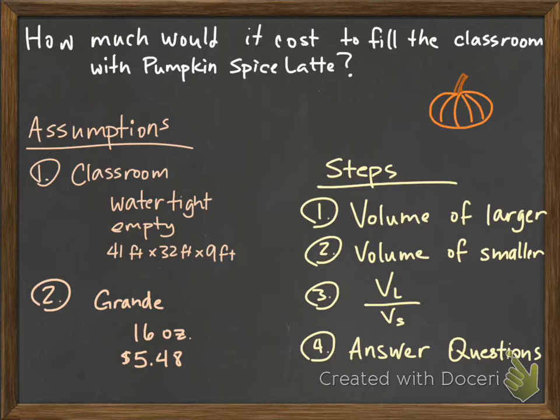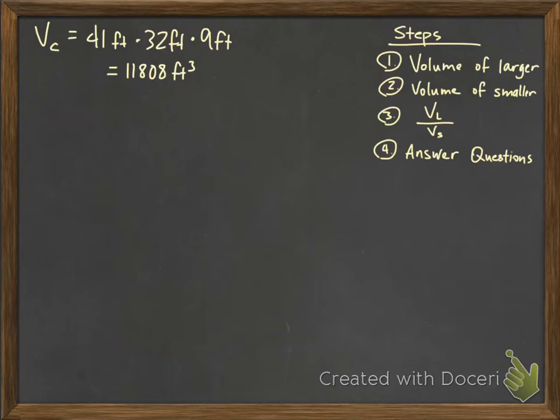Our step one is find the volume of the larger, in this case it's our classroom. So our volume of our classroom is 41 feet times 32 feet times 9 feet. This gives us 11,808 feet cubed.